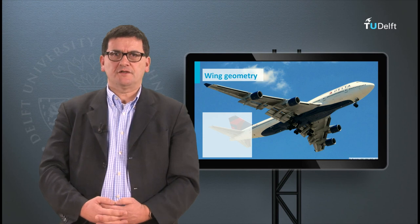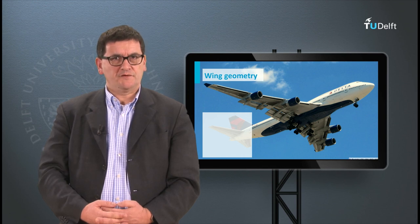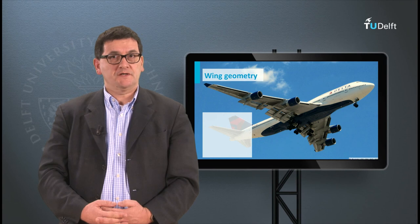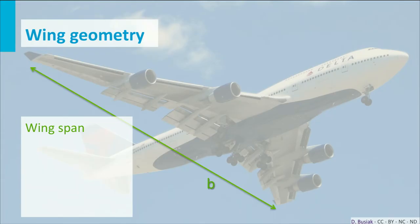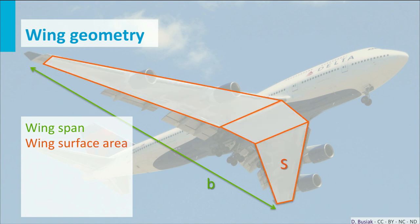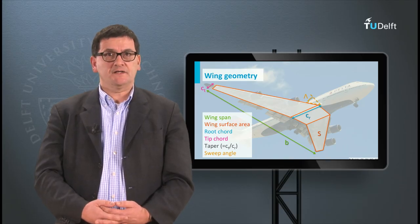To conclude this lecture I will briefly mention a number of parameters for the wing geometry. Most of these are optimized during the design of the wing and will have an impact on the lift coefficient and thereby on the lift force. First there is the wingspan, which is the length from wing tip to wing tip. Then we have the wing surface area. Next we have the root chord and the tip chord, which represent the chord length at the wing root and wing tip respectively. The taper is the ratio between these two. The last parameter to mention is the sweep angle, which is the angle between the leading edge and the y-axis of our coordinate system.